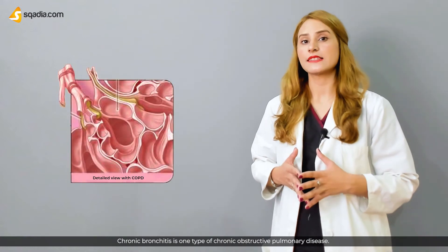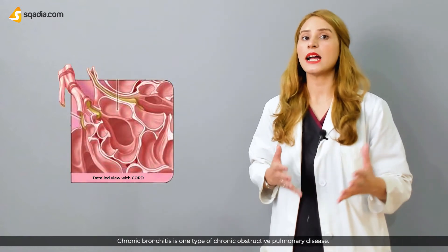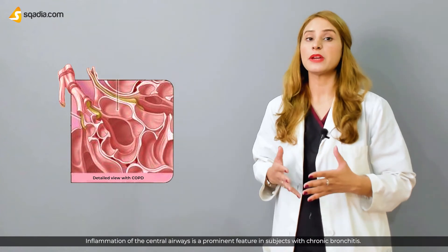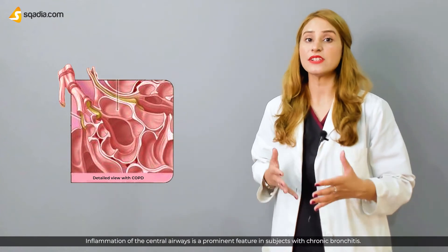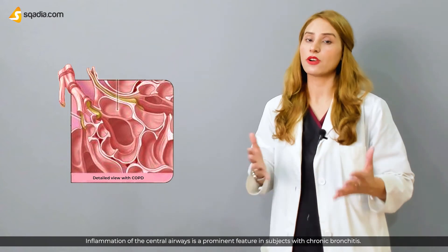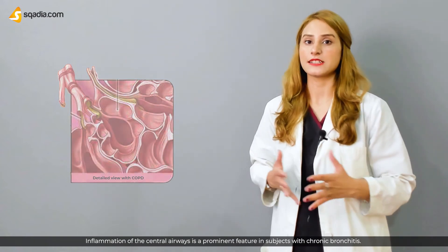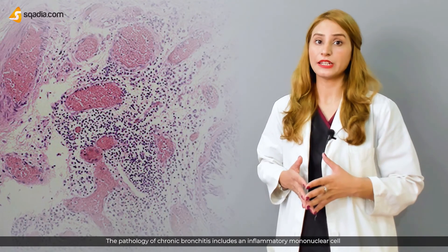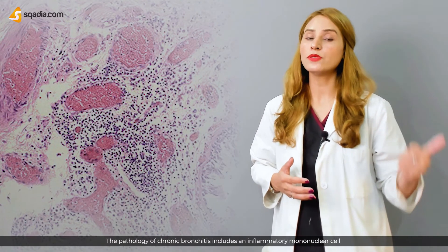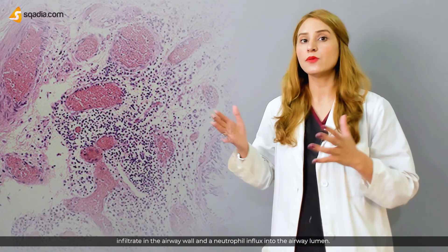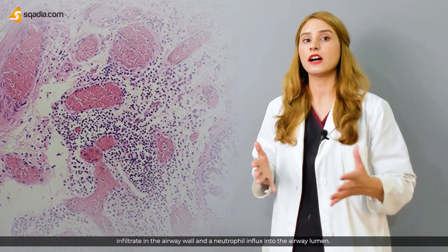Chronic bronchitis is one type of chronic obstructive pulmonary disease. Inflammation of the central airways is a prominent feature in subjects with chronic bronchitis. The pathology of chronic bronchitis includes an inflammatory mononuclear cell infiltrate in the airway wall and a neutrophil influx into the airway lumen.